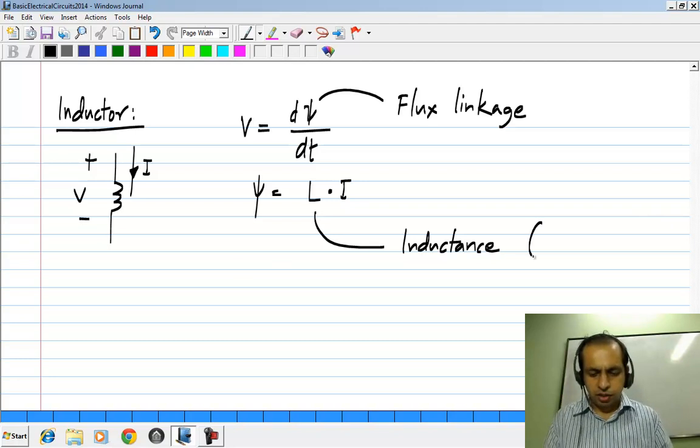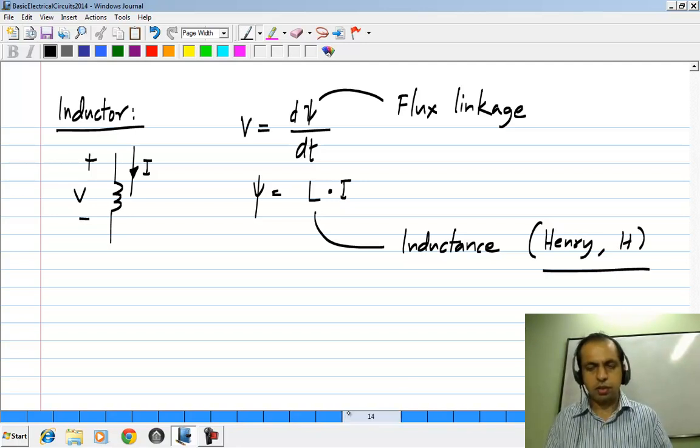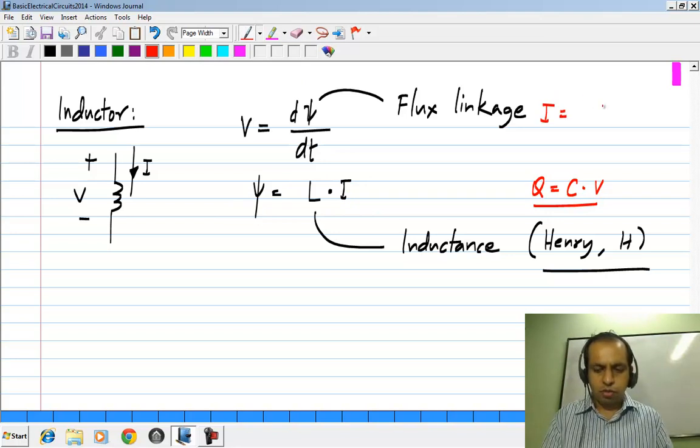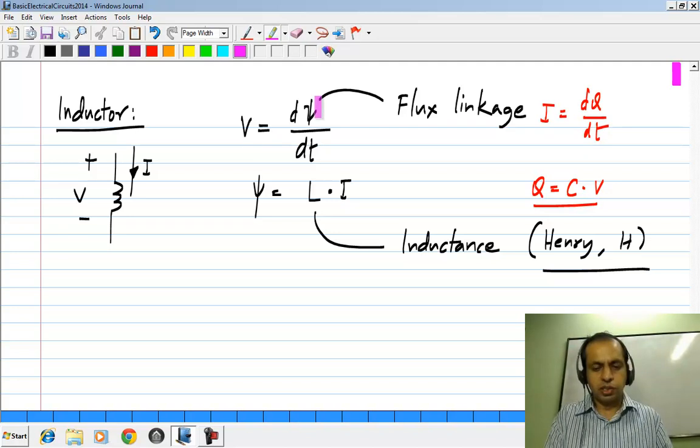The inductance is measured in Henry's or H. You can see that this relationship is analogous to charge being proportional to voltage here, the flux linkage is proportional to current, and the current was the rate of change of charge whereas the voltage is the rate of change of flux linkage. You can make this kind of analogy between quantities in a capacitor and in an inductor.